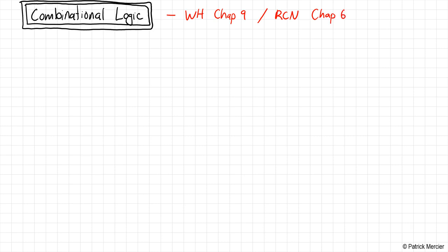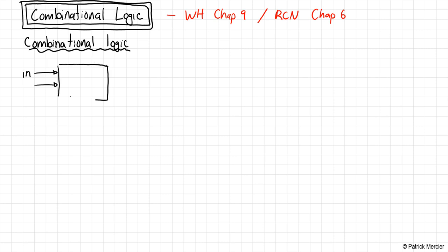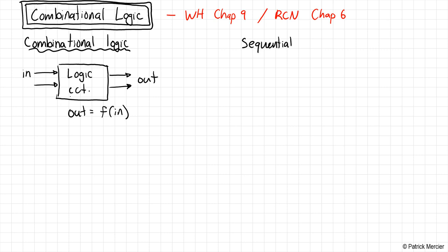So what do we mean by combinational logic? It's basically what we've been doing the entire time. We have some inputs that go into our logic cell — some logic circuit — and these create outputs, exactly as we've been studying. So what this means is the outputs are a function of the inputs. I'm being very explicit here because I want to contrast it to the other form of logic, which is called sequential logic.